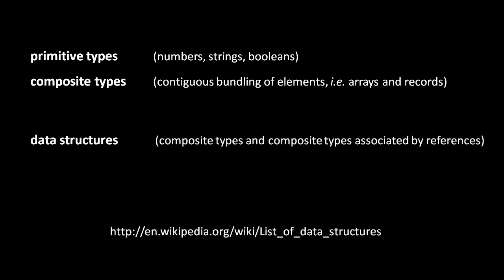Now composite types may be considered to be what we call a data structure, but the term data structure is more broad, as a single data structure also may encompass a group of composite types which are associated together by references connecting them. Like say, in one array or one record, you'll have a reference — a pointer — pointing to some other array or record. Effectively, we're talking about data which is related but not necessarily grouped contiguously in memory.